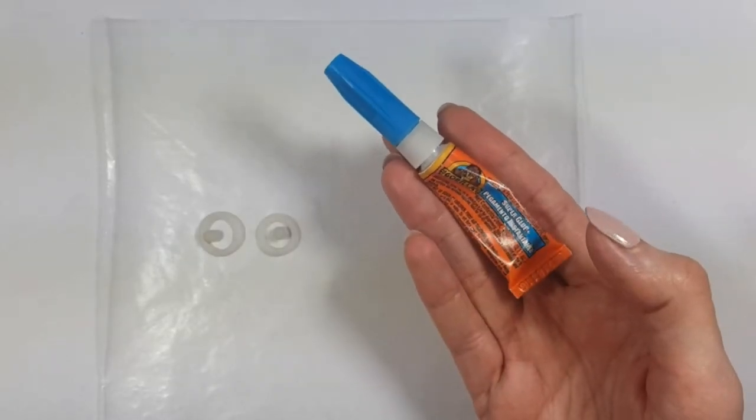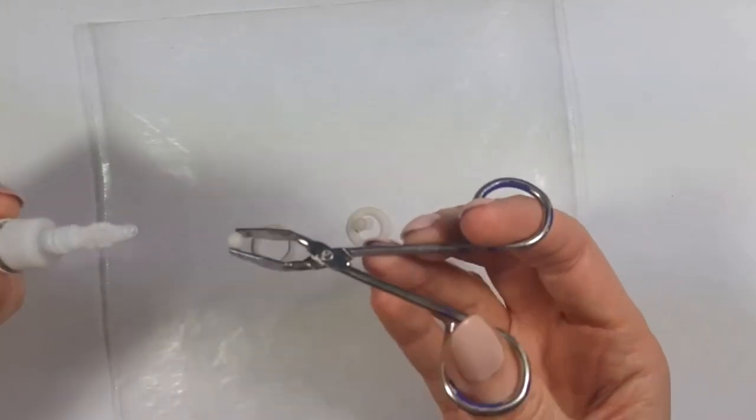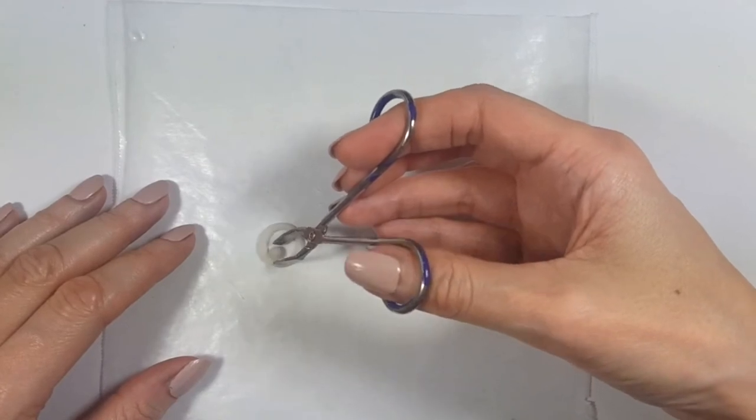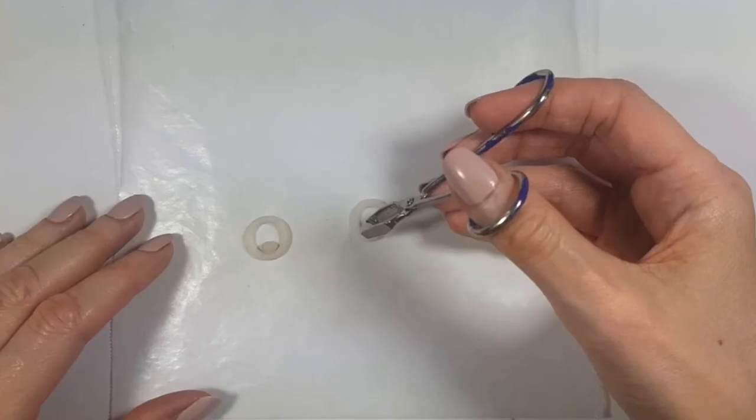I'm going to be using my super glue and tweezers. I'm going to grab the small tiny balls and add some glue to them, and then just glue them to the hoop itself like this.